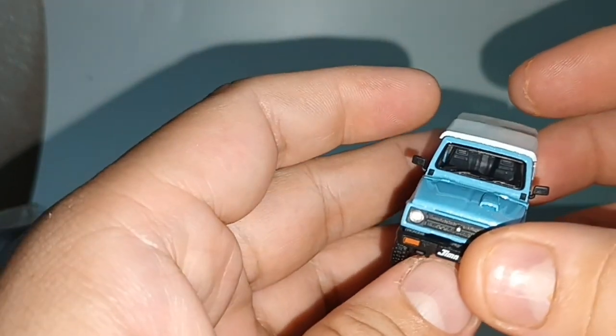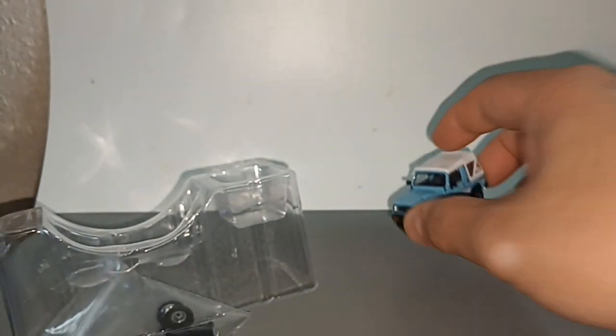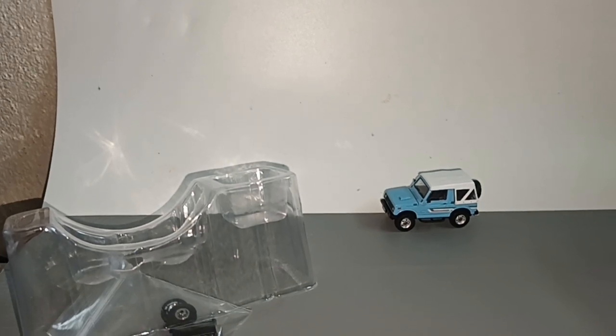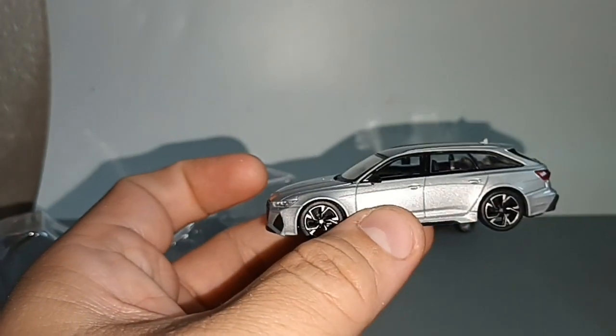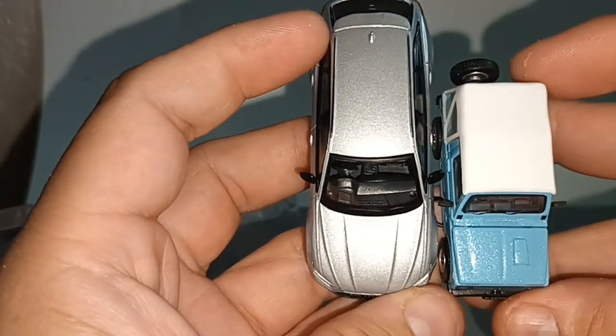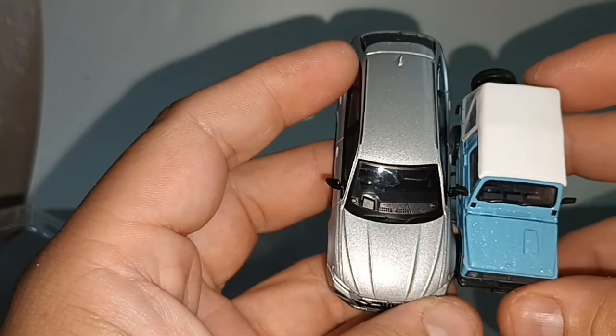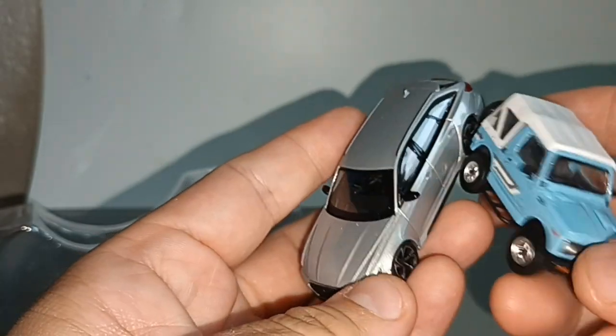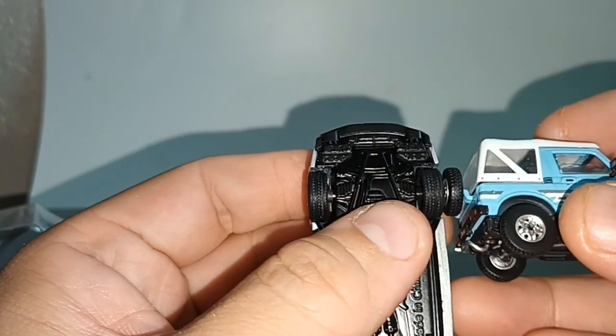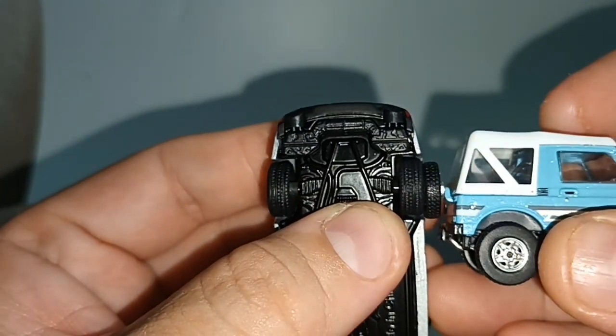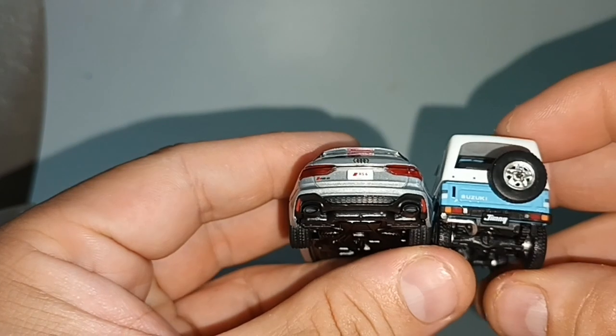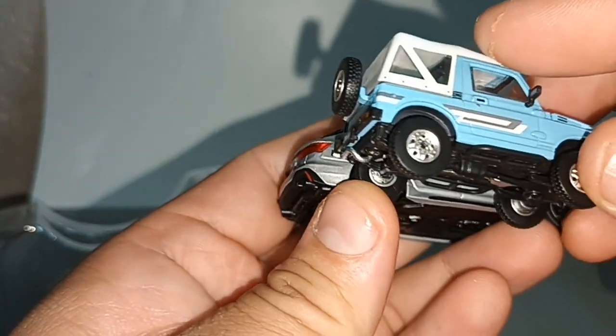Now to give you a perspective of how small this is, this is a 1:64 Audi station wagon and this is the Suzuki Jimny. Look at the comparative thickness of the wheels. The Suzuki is higher though because it has high ground clearance.